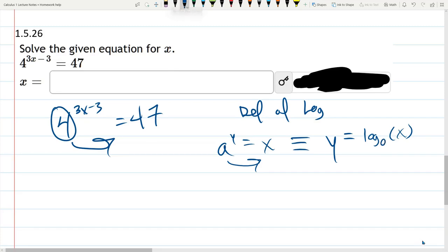So that's what we're going to use. When I move our base is 4 in this problem, the 3x minus 3 of the exponent just gets written by itself. The base moves to the other side. And it's log base 4 of 47.